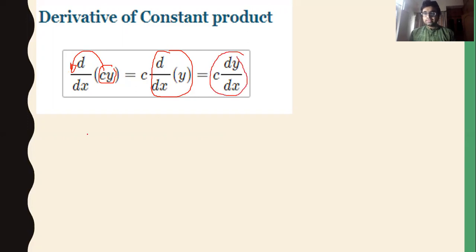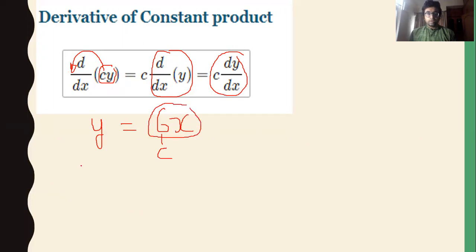Let's understand this with an example. Suppose we have y equal to 6x. You can see that 6 is a constant term and this is our whole function y. Now we want to differentiate this function, so we will find dy by dx. By applying the rule, we can separate the constant.